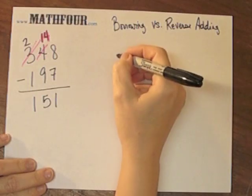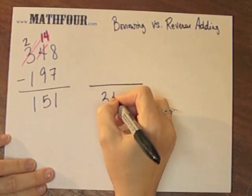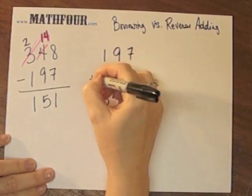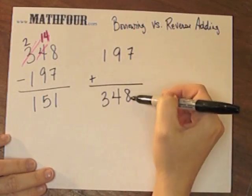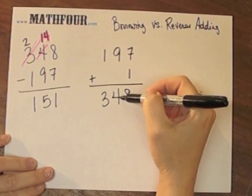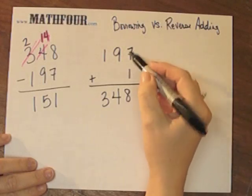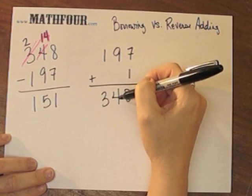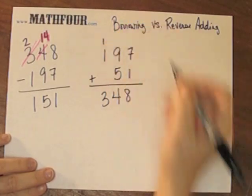Reverse adding works on the principle that 348 is the answer. 197 needs to be added to something to get 348. 7 plus what gives me 8? 1. 9 plus what gives me 4? Well, nothing — and you can't put negative numbers here, so we don't even have to go down that route. 9 plus 5, though, is 14. So if we had a 5 here, we'd do 9 plus 5 is 14, and carry the 1.